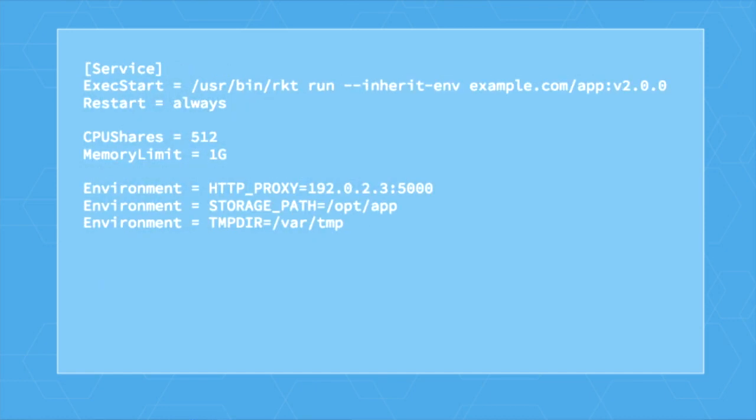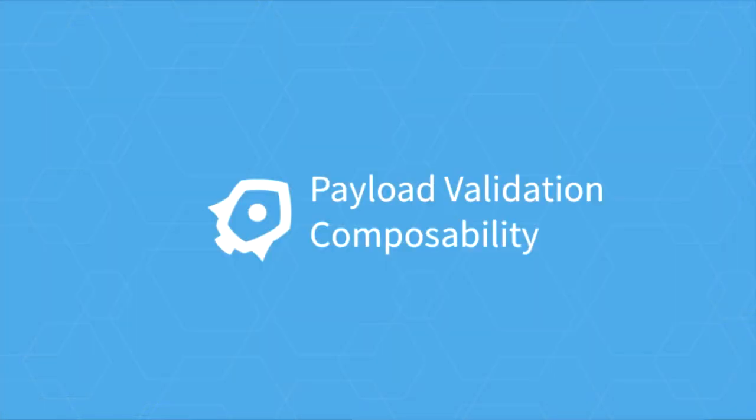In addition to security principles, Rocket was built with composability and proper integration in mind. This is a systemd unit file — Leonard will be talking more about systemd later. Rocket integrates with systemd just like Rocket is another process. You can see in this example Rocket is running that example.com app container we just verified, with a restart policy, with cgroup limits, and with environment variables all applied directly to the running container itself. With payload validation and composability, we have a secure building block to deploy the Tectonic software safely.